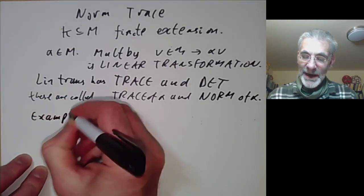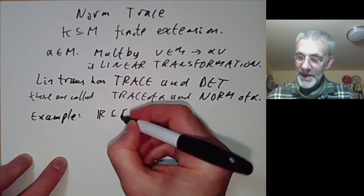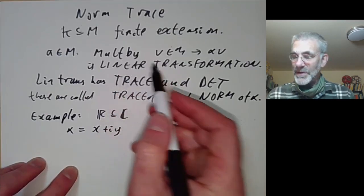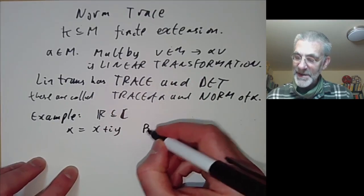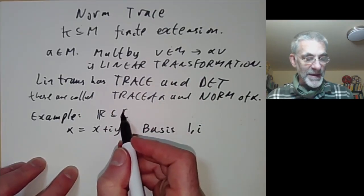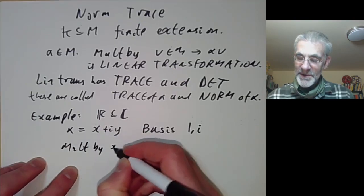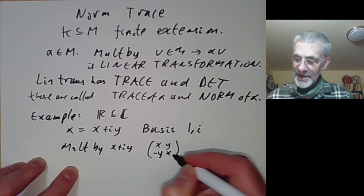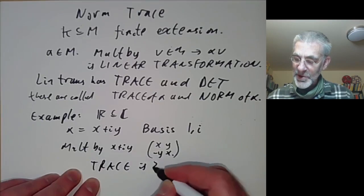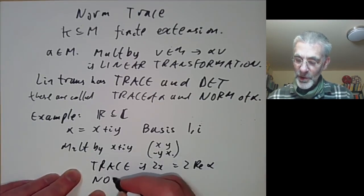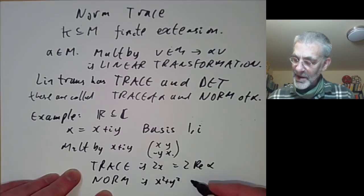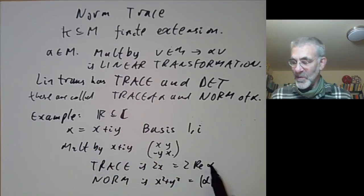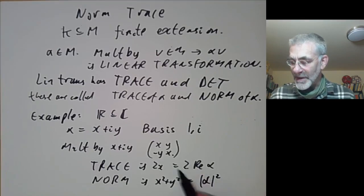For example, let's work out the trace and norm when the extension is R contained in the complex numbers — so it's degree 2. Let alpha be a complex number x plus iy. We pick a basis 1 and i for the complex numbers, and then multiplication by x + iy is given by the 2×2 matrix with entries x, y, −y, x. So the trace is 2x, which is 2 times the real part of alpha, and the norm is x² + y², which is the absolute value of alpha squared. The trace and norm are a generalisation of the real part and the absolute value of a complex number, ignoring factors of 2.